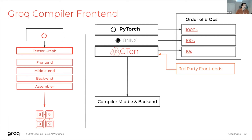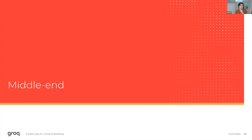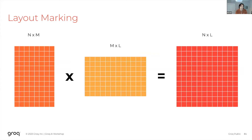We're able to use just tens of operations because we're a kernelless compiler. Many other hardware platforms need hundreds of operations to be performant, as it allows them to specialize for each op. Because of our dataflow architecture, we don't have to.